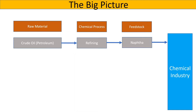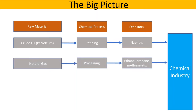The second raw material is natural gas. Natural gas is mostly methane, but has ethane and propane that can be extracted and used as feedstocks.